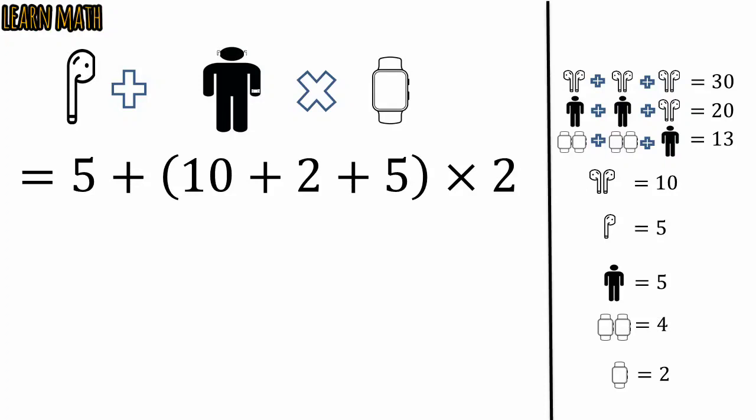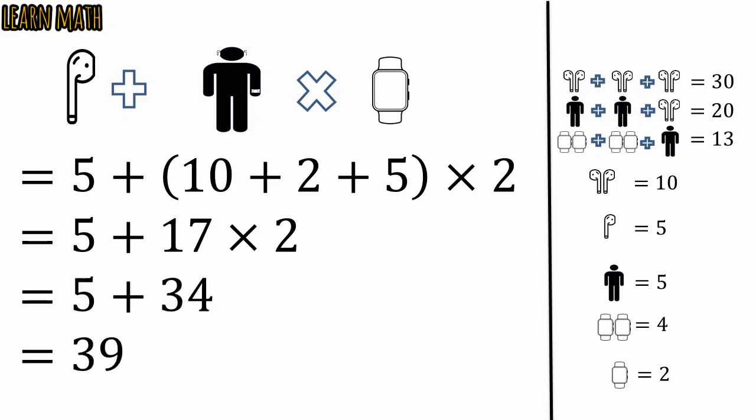So 5 plus 10 plus 2 plus 5 is 17 multiplied by 2. First we will do multiplication so 5 plus 34, that is equal to 39 which is the required answer.